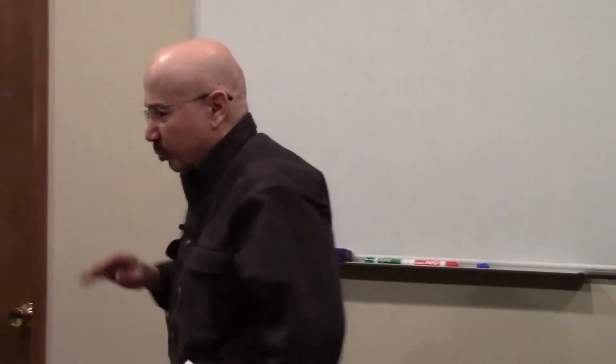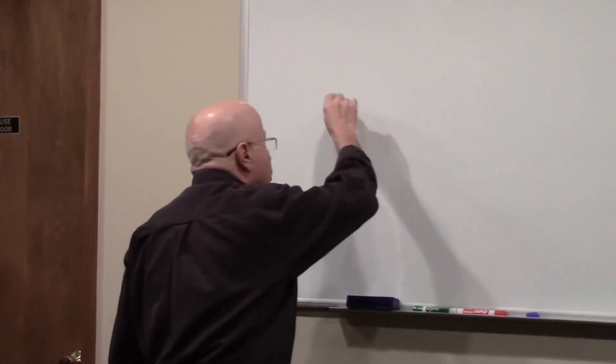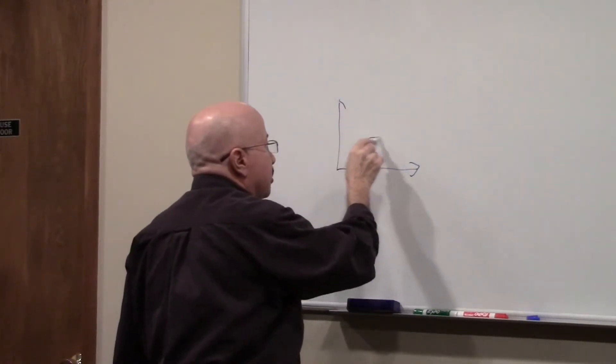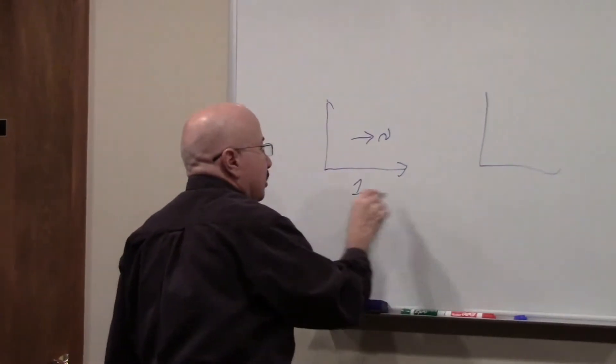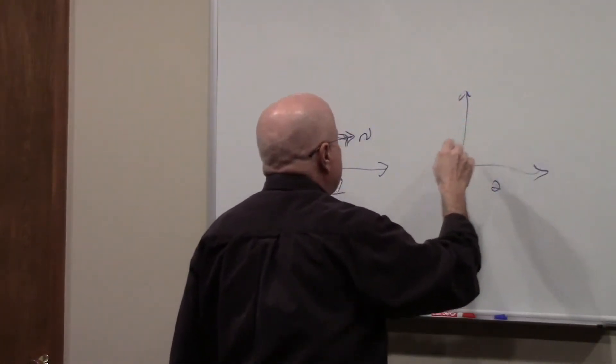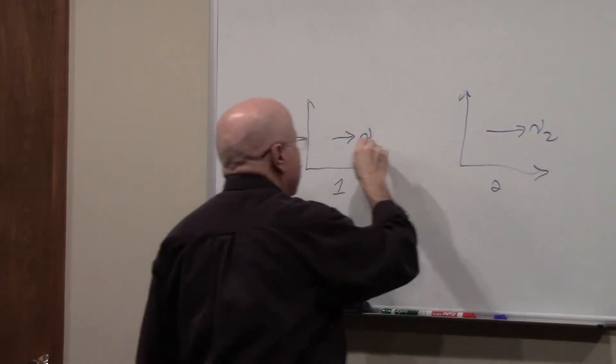In our last discussion in part three, we talked about the Galilean transformation. When we say transformation, we're talking about inertial frames of reference - a frame of reference that's moving at a constant velocity. We're talking about how you transfer from one inertial frame of reference to another that might be moving at a different velocity.